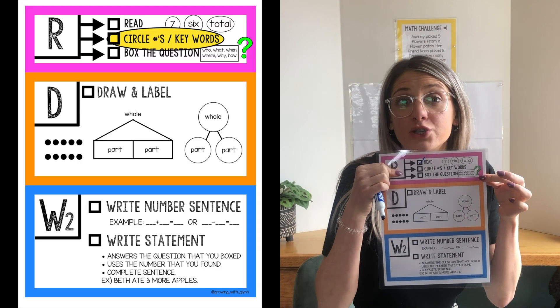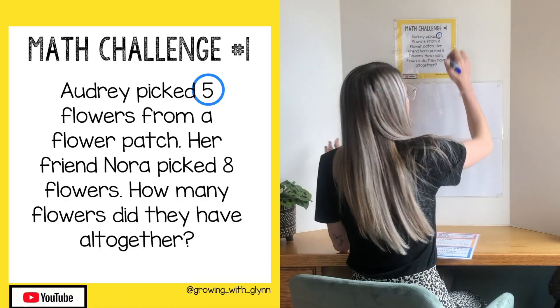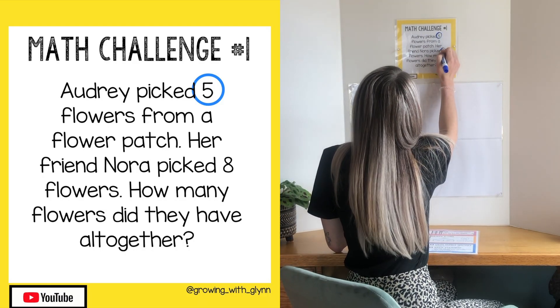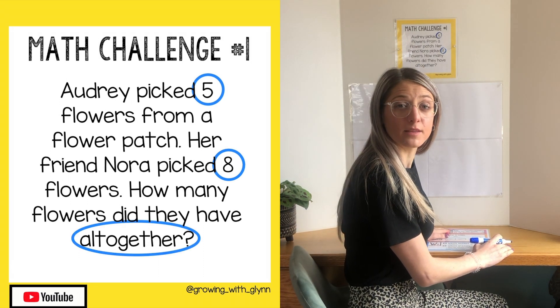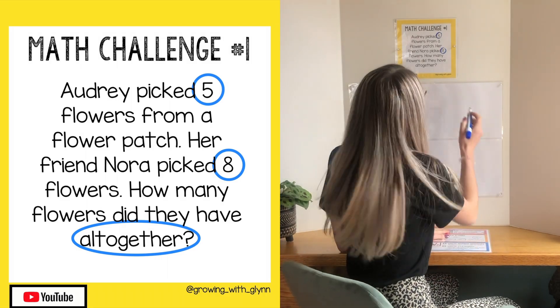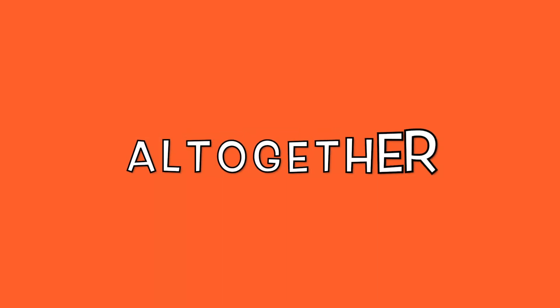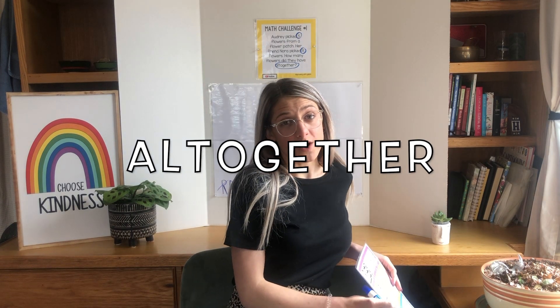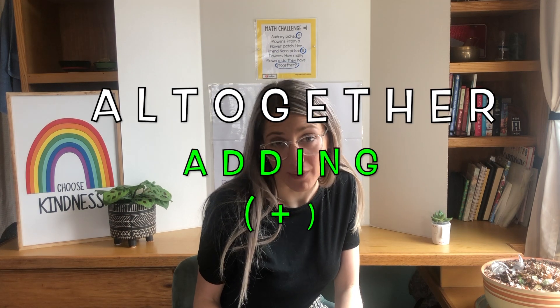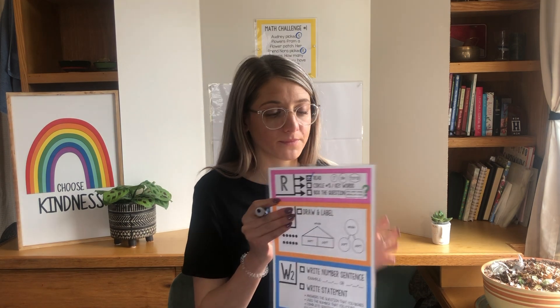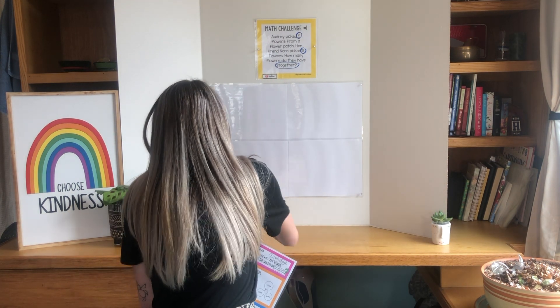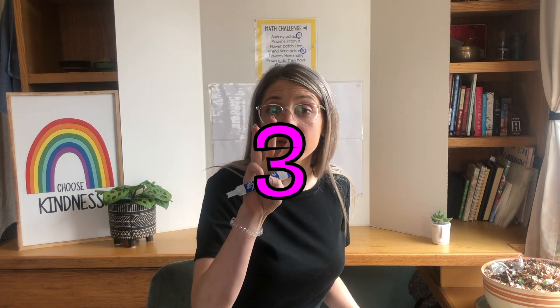The second thing we need to do is circle the numbers and key words. There's a five and there's an eight. Our key word here is the last word in the problem, and that word is 'all together.' When we see this key word 'all together,' it usually means that we're going to be adding. Now that I've circled my numbers and key words, I can go ahead and check off the second box in R and make my second line on the R.